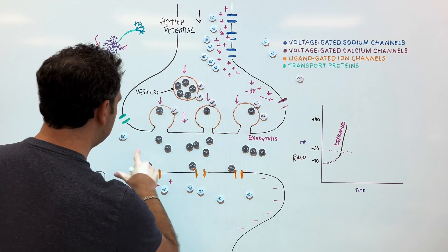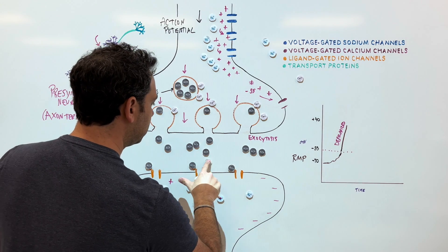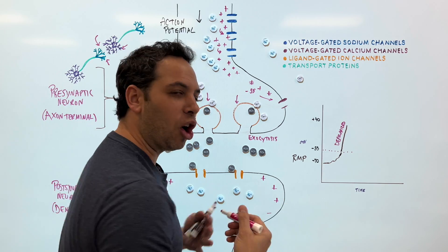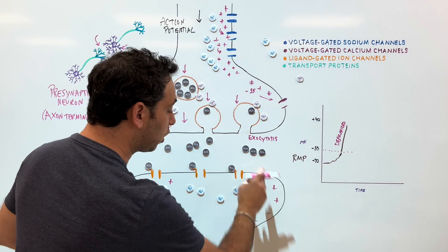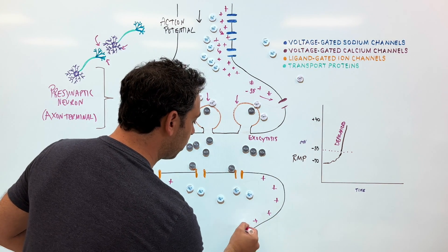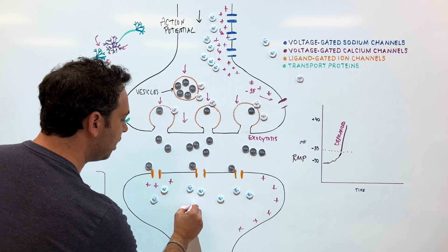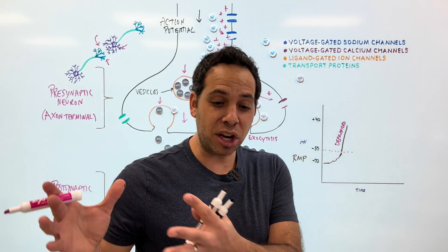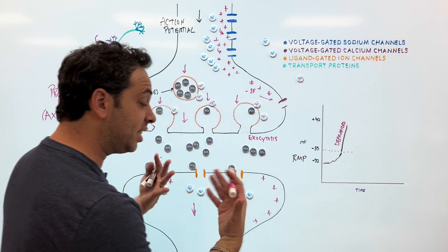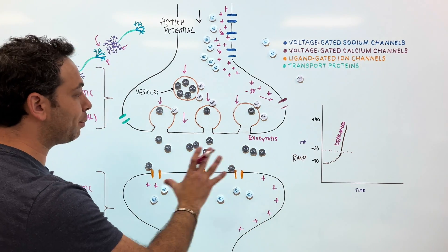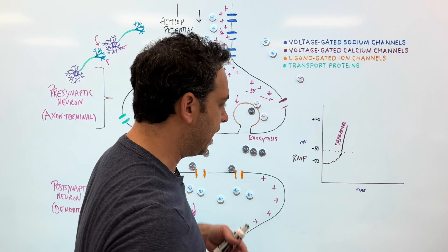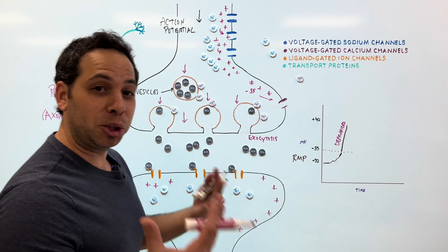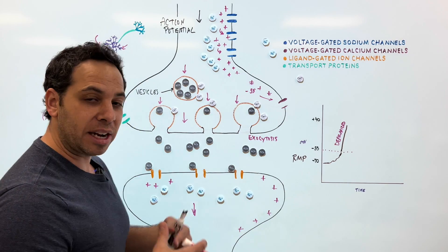All the ligand receptors open, all the sodium travels in, making it super positive again, and it starts the process all over. We're now depolarizing the next cell — we just caused another action potential. If this is excitatory, we're going to continue that process again and again. Now, it is important to know not every neurotransmitter is going to dock itself right on the receptor.